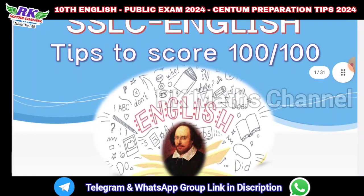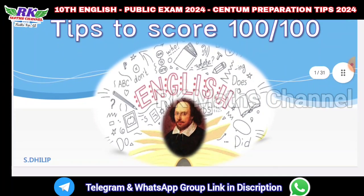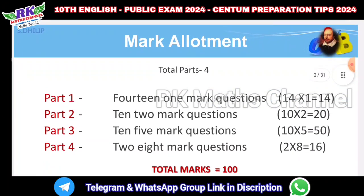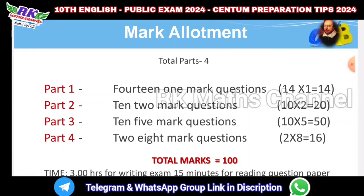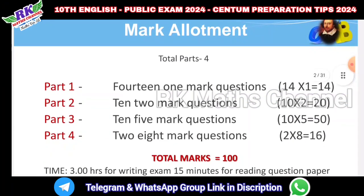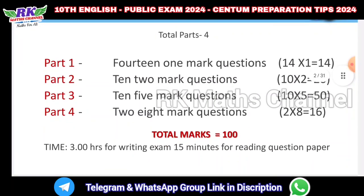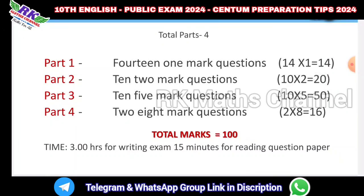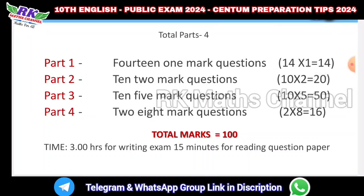Tips to score 100 out of 100. First, let's look at mark allotment. We have the English exam. Part 1 is 14 one-mark questions, totaling 14 marks. Part 2 is 10 questions of 2 marks each, totaling 20 marks.